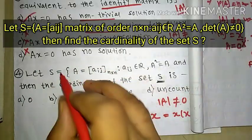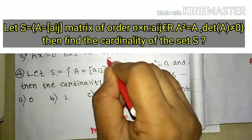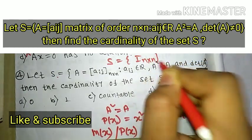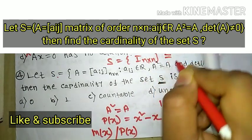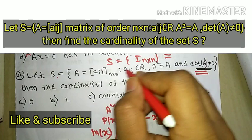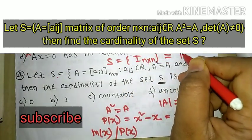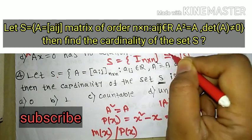So S is the set which contains only the identity matrix. The cardinality, meaning the number of elements contained in the set, is 1. Therefore, the cardinality of S is 1.